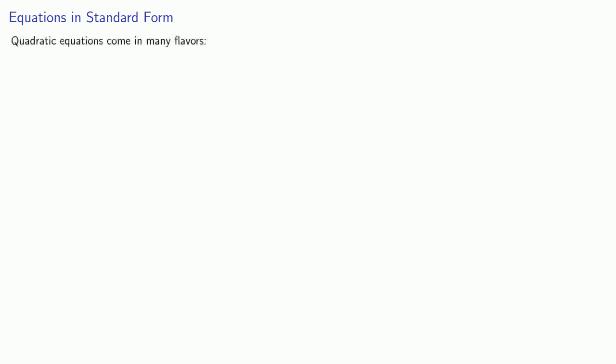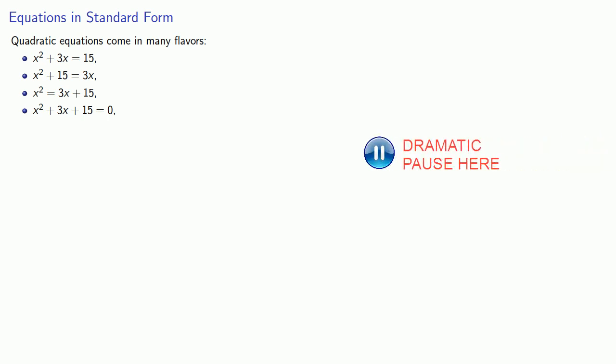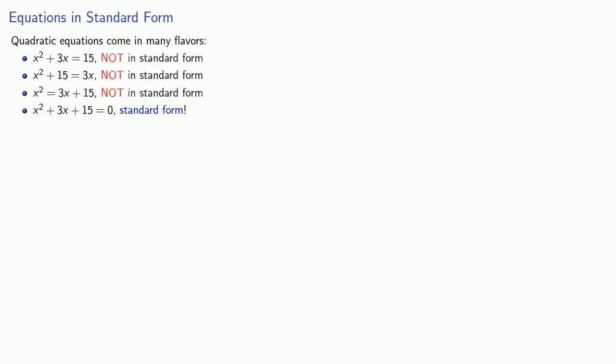The main disadvantage to automating everything and putting it into a formula is that we have to have our equations in standard form. While quadratic equations come in many flavors — variables on one side with the constant on the other, mixed arrangements, or everything on one side equal to zero — we pick one form as standard. We say a quadratic equation is in standard form when it is in the form: expression equals zero.